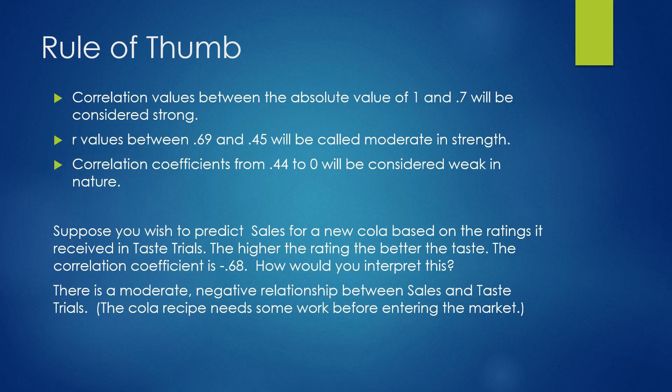The rule of thumb for what makes a strong, moderate, or weak relationship goes as follows. Correlation values between the absolute value of 1 and 0.7 will be considered strong. R values between 0.69 and 0.45 will be called moderate in strength. Correlation coefficients from 0.44 to 0 would be considered weak in nature.